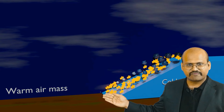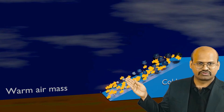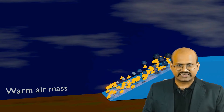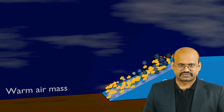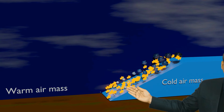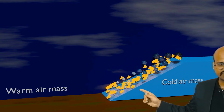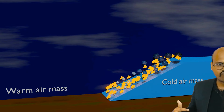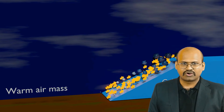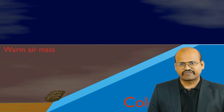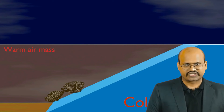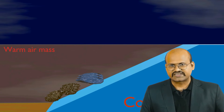Because the upliftment of air is very slow, we do not see that much rain. Rain does occur on these fronts but it is relatively less compared to cold fronts. Moreover, this front affects a very large area because the distance it spans is very large compared to the cold front. Another phenomenon which occurs at the warm front is that sequential clouds are formed.